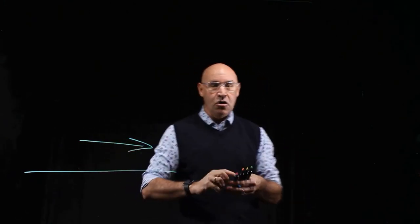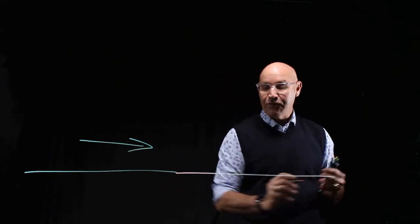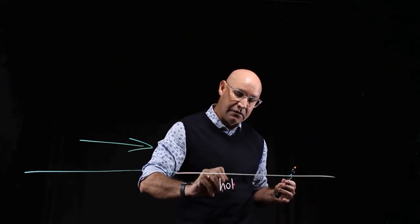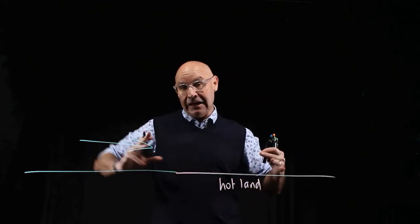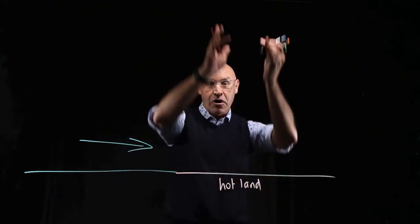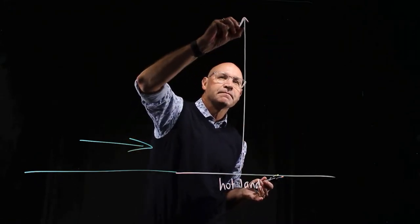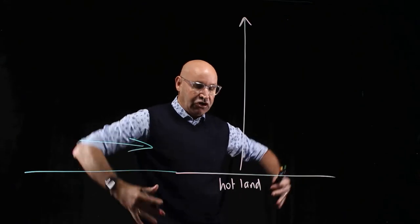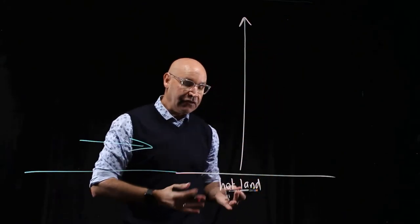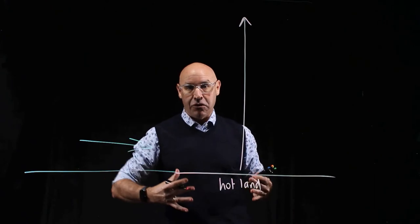Not all clouds create lightning. There needs to be very specific conditions for lightning to form. Firstly, there needs to be moist air, and often this moist air blows in from over the ocean. When this moist air travels over hot land, the air heats up. And of course, hot air rises, so these powerful currents of air rise up into the atmosphere. This is what we call an updraft.